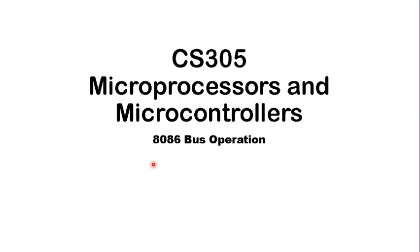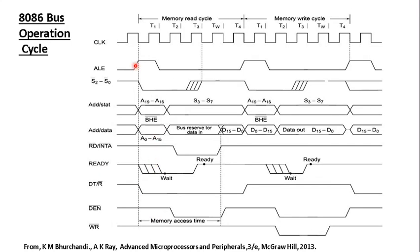In this video we will see the 8086 bus control signals generated for read and write cycles. This timing diagram shows a read cycle as well as a write cycle, the various clock cycle stages involved, and the bus signals generated. We are going to break down this big timing diagram into smaller parts which we can understand, and then we will analyze the roles of each signal.